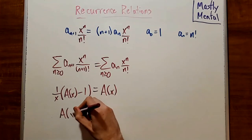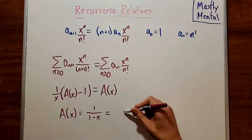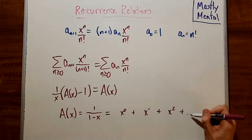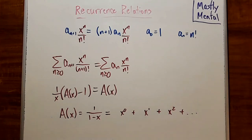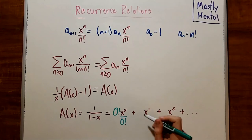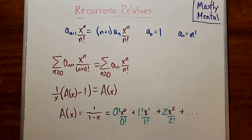Solving, we get A(x) is 1 over 1-x. Now we need to get the coefficient of x^n over n!. And so to do that, we're going to rewrite this as x^0 plus x^1 plus x^2 and so on. And then we're going to multiply and divide each term by the same thing. So in this case, 0! over 0!, 1! over 1!, 2! over 2!, and so on. And so the coefficient of x^n over n! is just going to be n!. So a_n is n!, as we saw before.